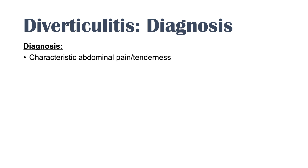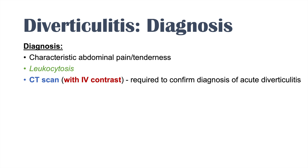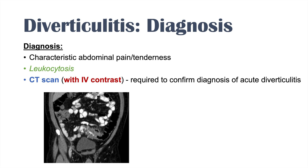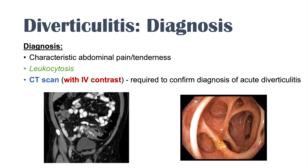The diagnosis of diverticulitis is suspected when we see characteristic abdominal pain and tenderness — left lower quadrant pain, constant pain with associated changes in bowel habits, fever, and tachycardia. Blood work may show leukocytosis. A CT scan with IV contrast is required to confirm the diagnosis of acute diverticulitis and to ensure there are no complications. A colonoscopy is not recommended in diverticulitis because of the weakened, inflamed wall of the diverticula.